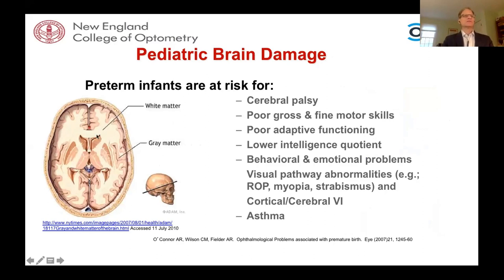Associated with brain damage in the premature infant are cerebral palsy, gross and fine motor issues, poor adaptive functioning, potentially lower IQ, behavioral and emotional problems, visual pathway abnormalities such as retinopathy of prematurity, myopia, strabismus, and also cortical or cerebral visual impairment, as well as asthma from the developing lung.